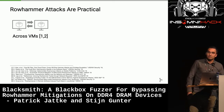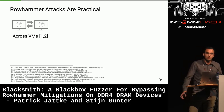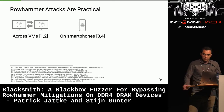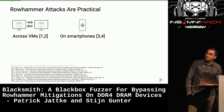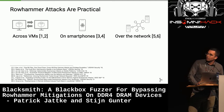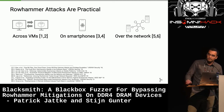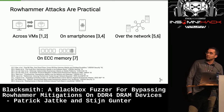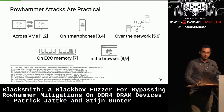Rowhammer attacks are really practical. For example, you can exploit across VMs on applications running on the same host. It has been shown that rowhammer works on smartphones with LPDDR memory, even over the network using RDMA which allows accessing memory directly via the network card. Rowhammer has also been shown to work on devices employing ECC memory, typically used in servers, and even over the network in the browser via JavaScript.